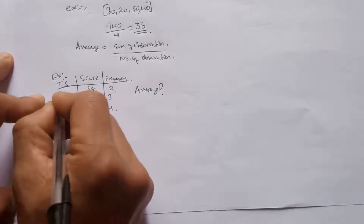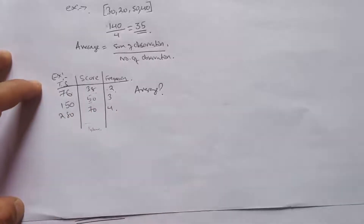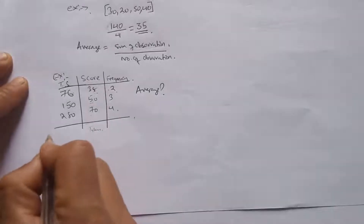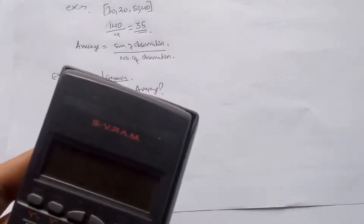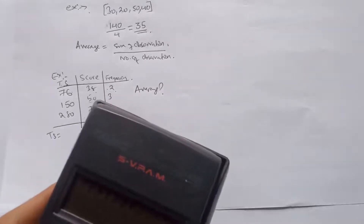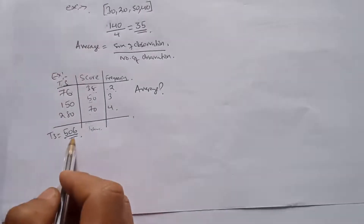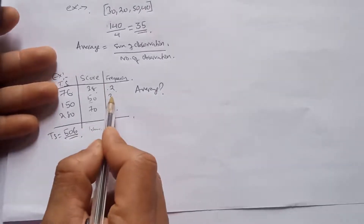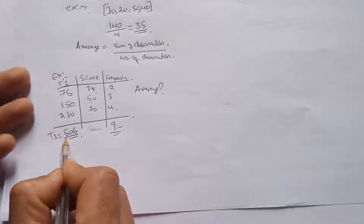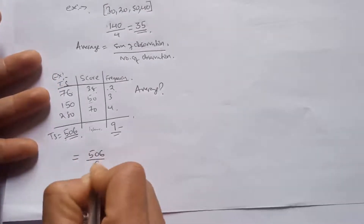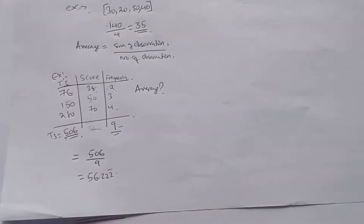38 multiplied by 2 gives 76. 50 multiplied by 3 gives 150. 70 multiplied by 4 gives 280. We add 76 plus 150 plus 280, we get 506. So this is the total score. The total number of observations is 2 plus 3 plus 4 equals 9. Sum of observations is 506. So using the formula, 506 divided by 9, we get the average, which is 56.22 recurring.